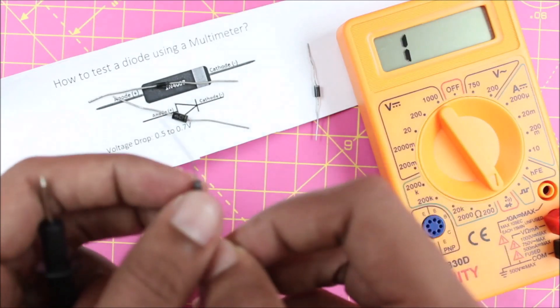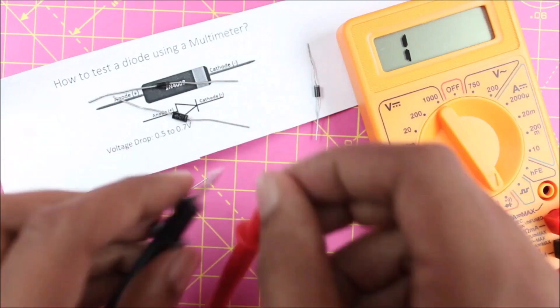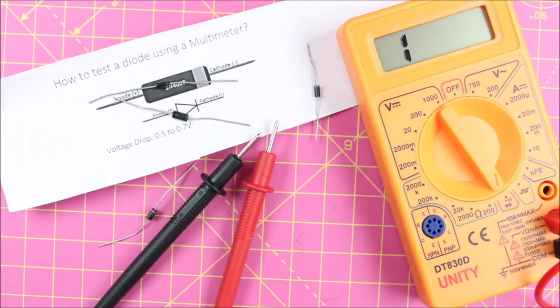So that is it guys. This is how you can use a multimeter to check if your diode is working or not. Thanks for watching, have a nice day. Bye bye.